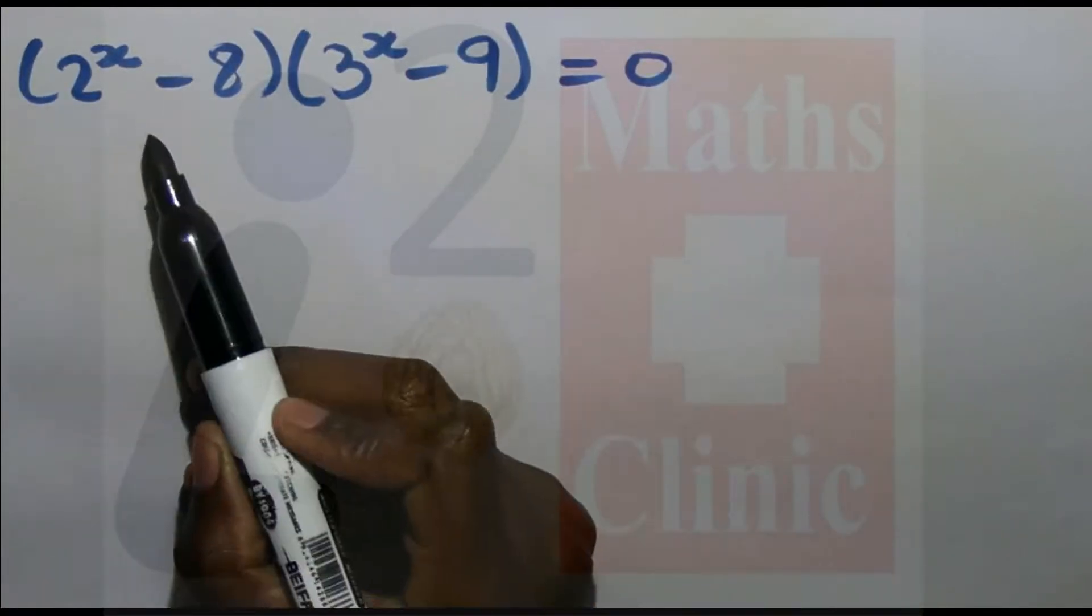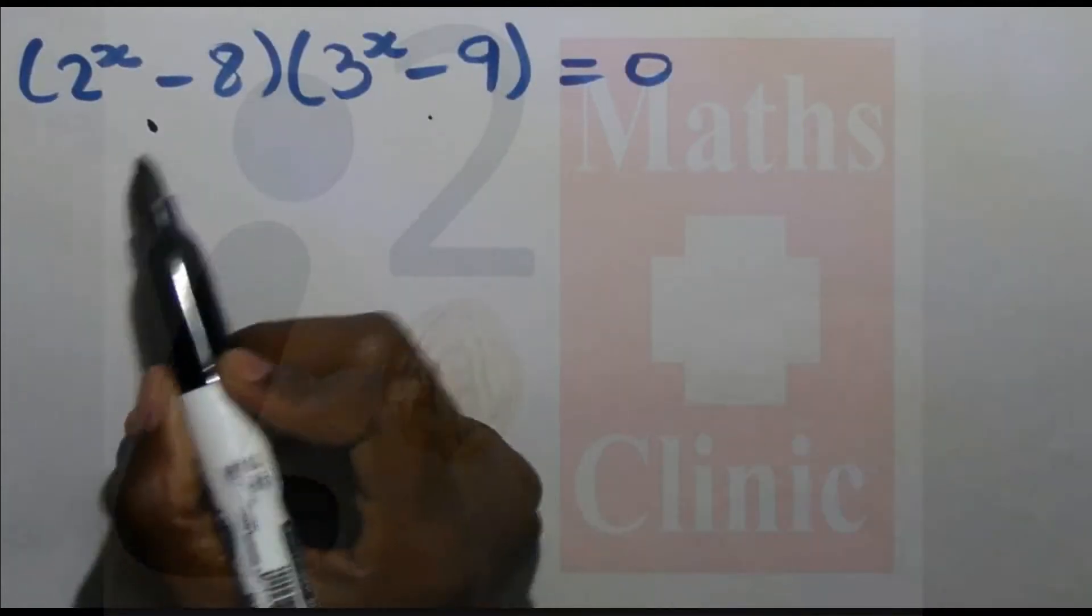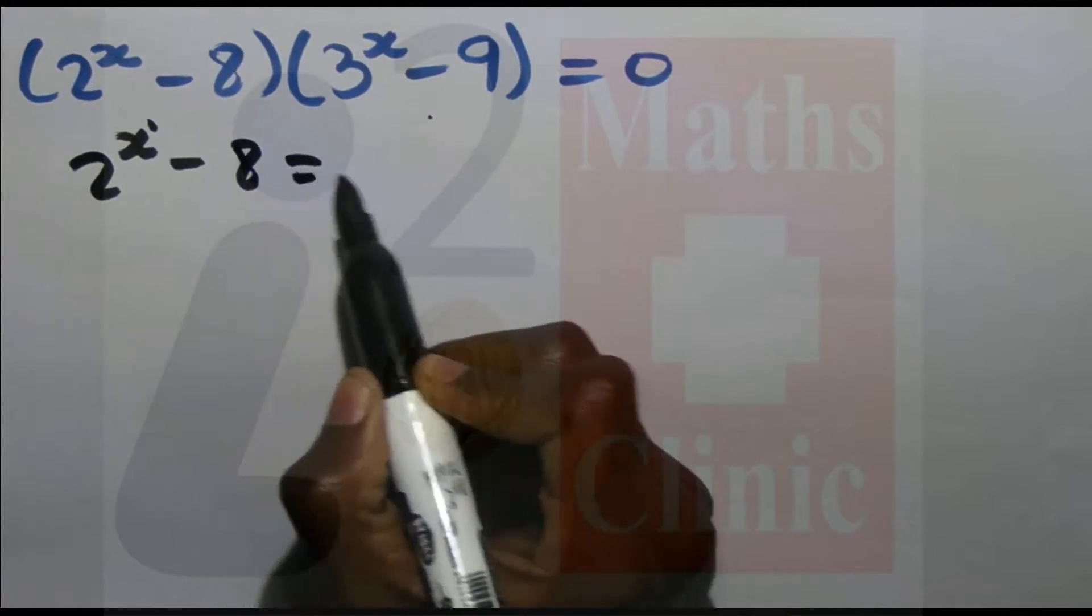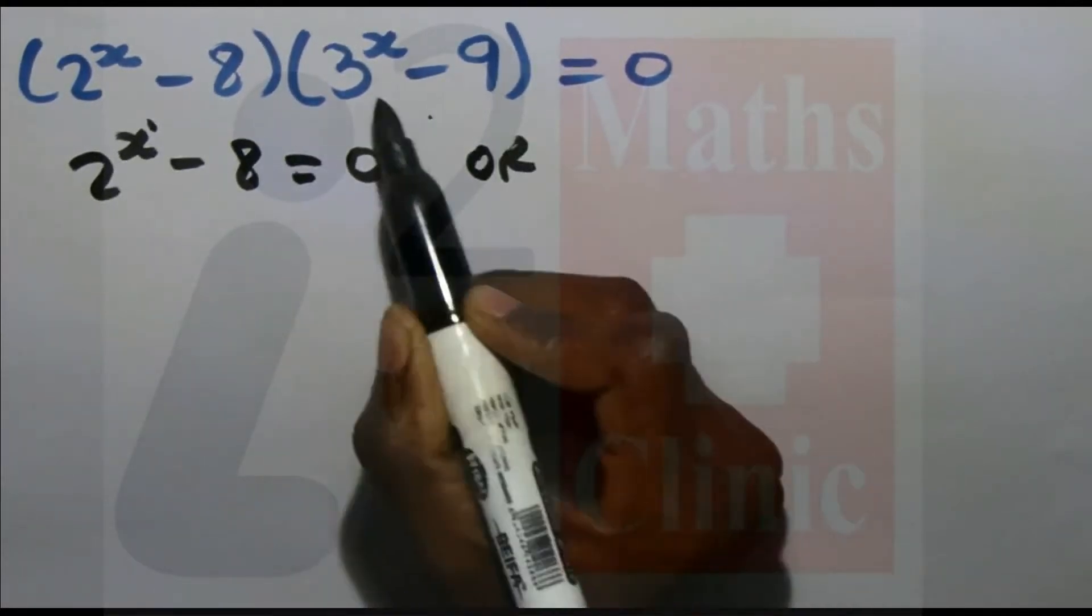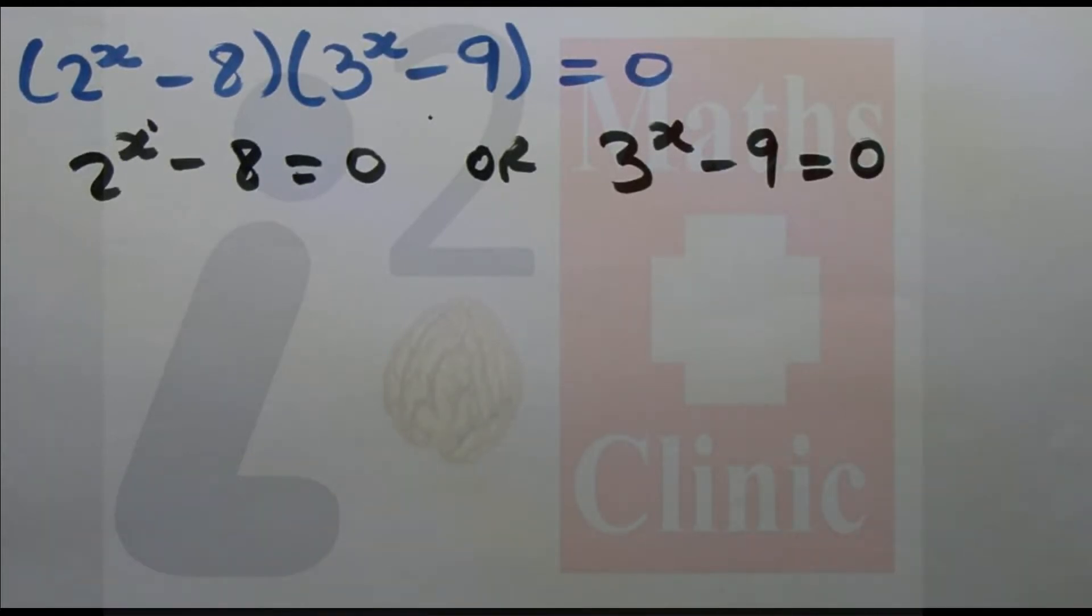Then you equate each bracket to zero. So we have 2^x - 8 = 0 or 3^x - 9 = 0. Now I'll solve each equation.